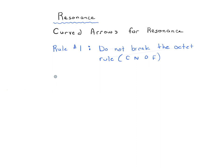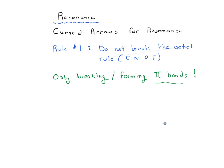The second important thing when talking about resonance forms is that we're only going to be breaking and forming pi bonds — double bonds. We're not going to be forming or breaking single bonds here. We're just moving pi electrons around.